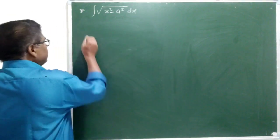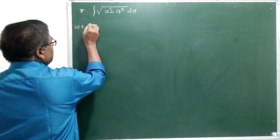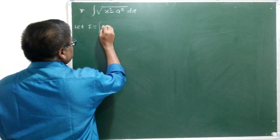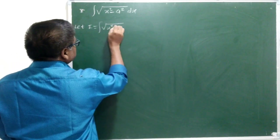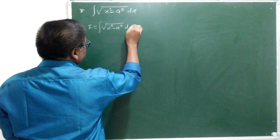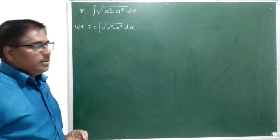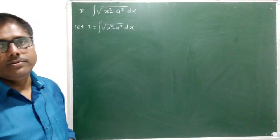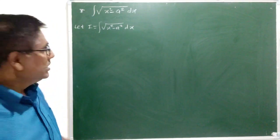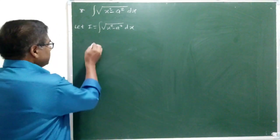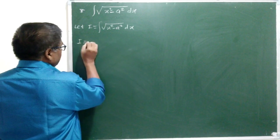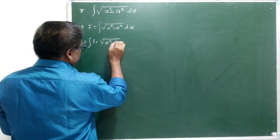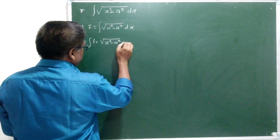Let us assume the value of this integral as I, so I is equal to the integral of root x square minus a square dx. As we are going to apply the integration by parts formula, we should have two functions. Therefore, let us rewrite this as I equals the integral of 1 into root of x square minus a square dx.